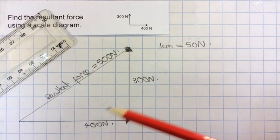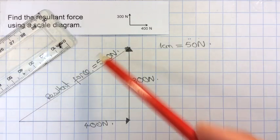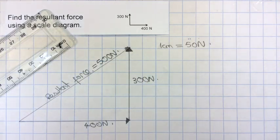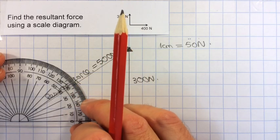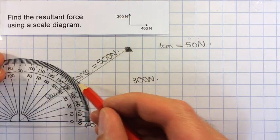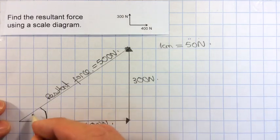Those of you who like maths might notice that this is a 3-4-5 triangle, so that's not entirely surprising. And then the last thing we can do is measure the angle of the resultant force. And if we do that, that comes out at 37 degrees, so I can label that up.